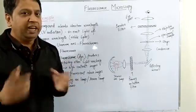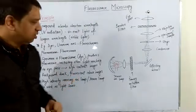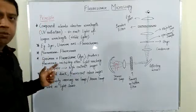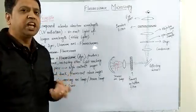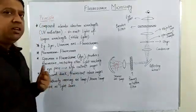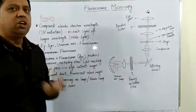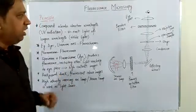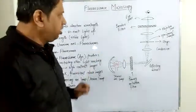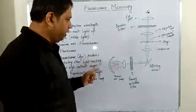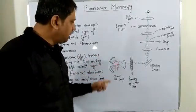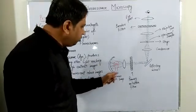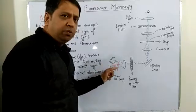For fluorescence microscopy, we use a special high-intensity mercury arc lamp or xenon arc lamp, because we need a high-intensity light beam. Let us discuss its ray diagram. A high-intensity light beam comes from a xenon arc lamp or mercury arc lamp.